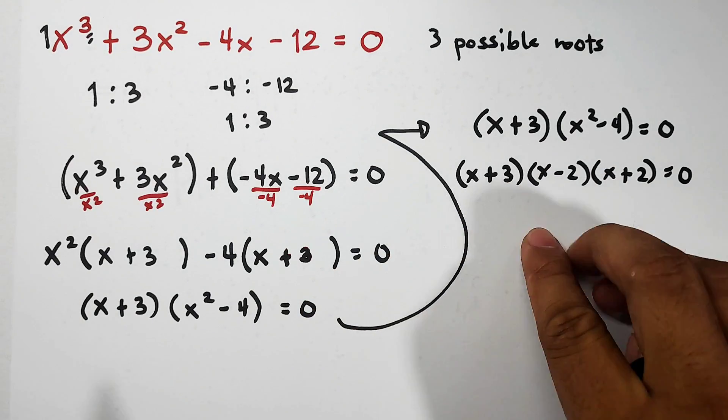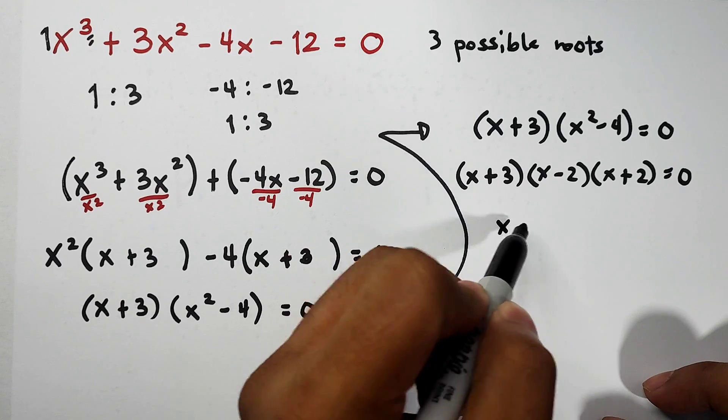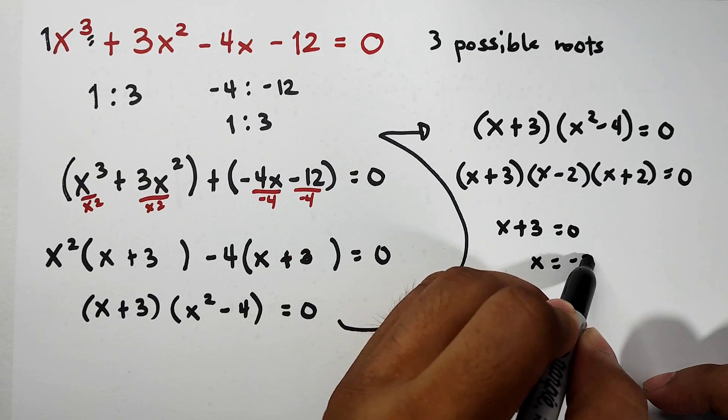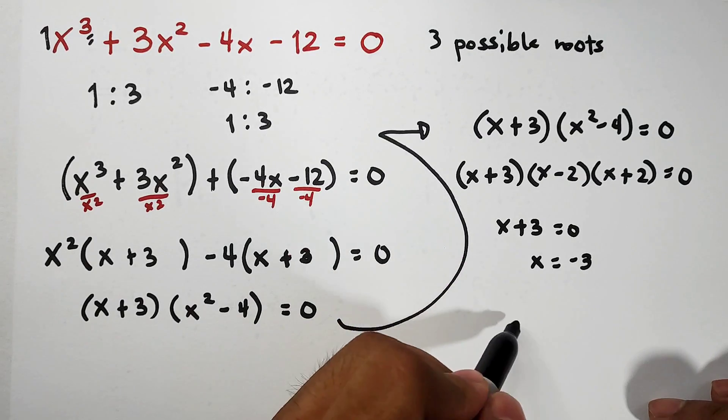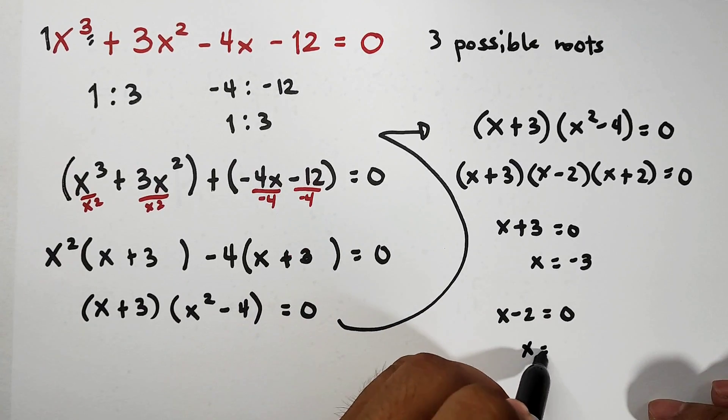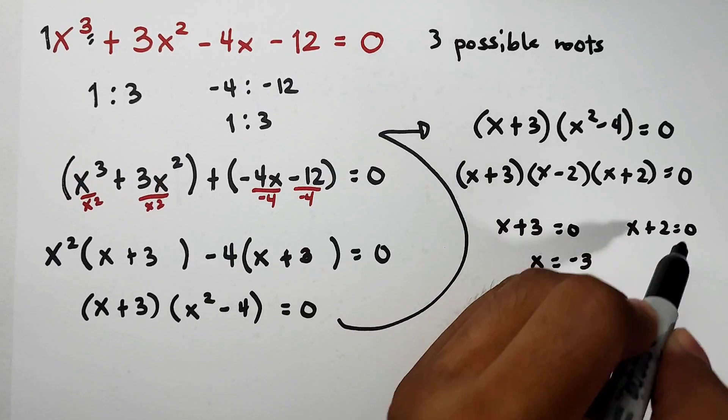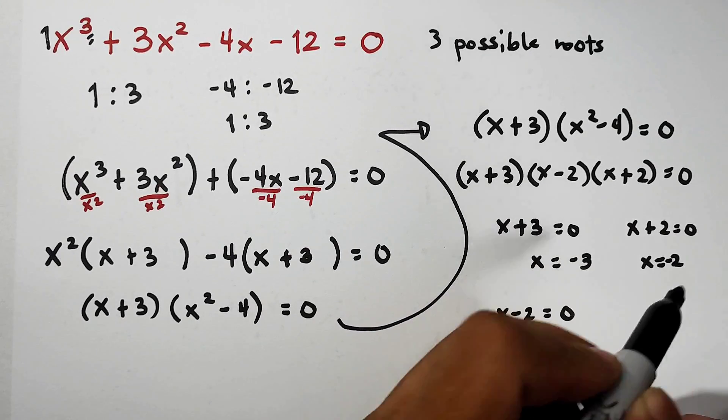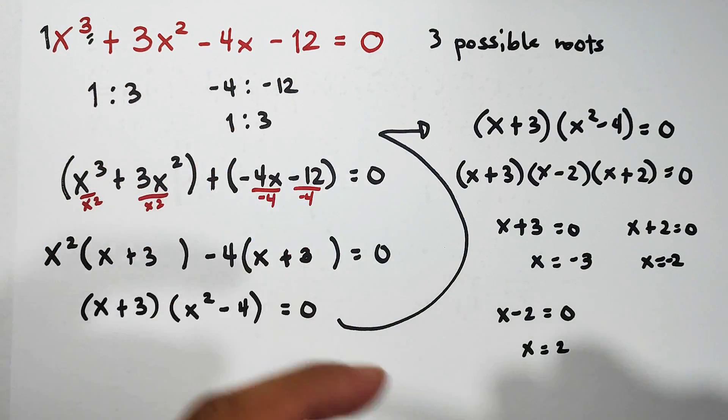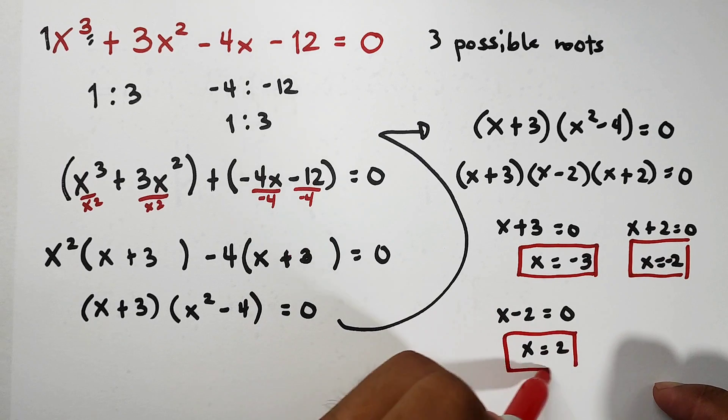As you can see, we have three factors, so we have 3 possible roots. Equate all the factors to 0. x plus 3 equals 0, so x equals negative 3. Second factor: x minus 2 equals 0, so x equals positive 2. That's the second root. Third factor: x plus 2 equals 0, so x equals negative 2. These are now the three possible roots of the equation x cubed plus 3x squared minus 4x minus 12 equals 0.